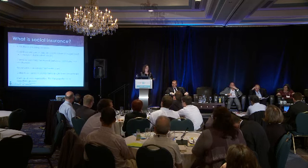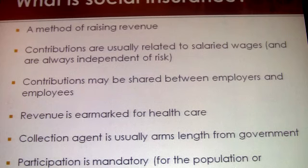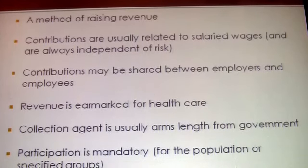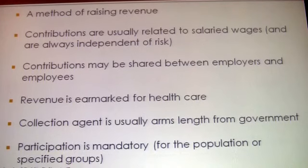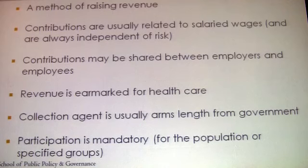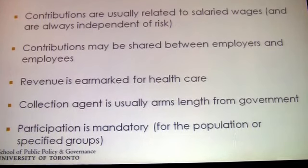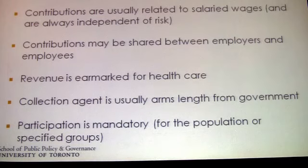So what is social insurance? The models vary in their design across jurisdictions — there's no one definition of what a social insurance model looks like. However, there are many features they have in common. For example, it is a method of raising revenue; contributions are usually related to salaried wages but are always independent of an individual's risk, unlike in individual private insurance markets. Contributions may be shared between employers and employees. Revenue is earmarked for health care, the collection agent is usually arm's length from government, and participation is mandatory. The way it can be introduced depends on a country's existing institutional and historical characteristics and public priorities.